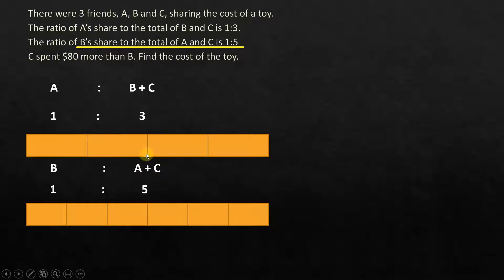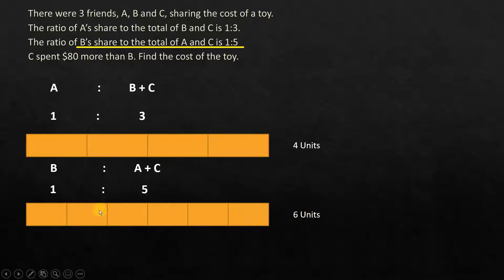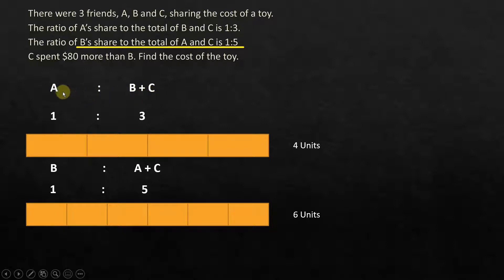If you observe carefully, you can see that the unit sizes are different. The number of units in the first diagram equals 4 units total, and in the second we have 6 units total. So the unit numbers are also different. But one quantity did not change — the total amount of money with A, B, and C. Both diagrams represent the same total amount of money with A, B, and C.